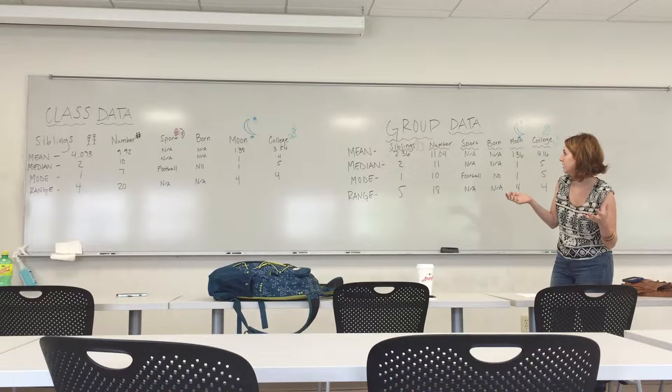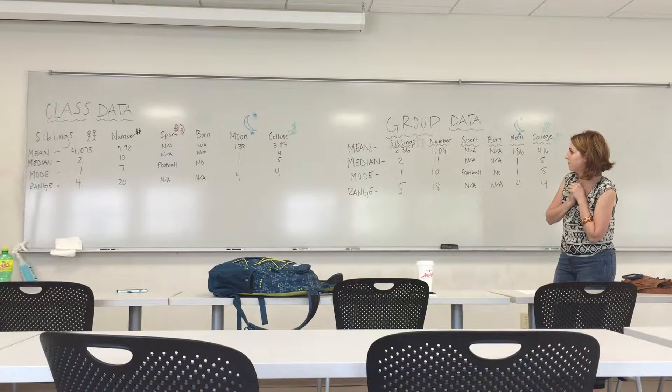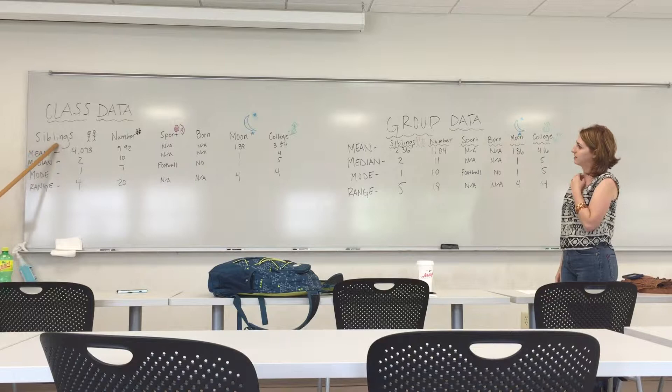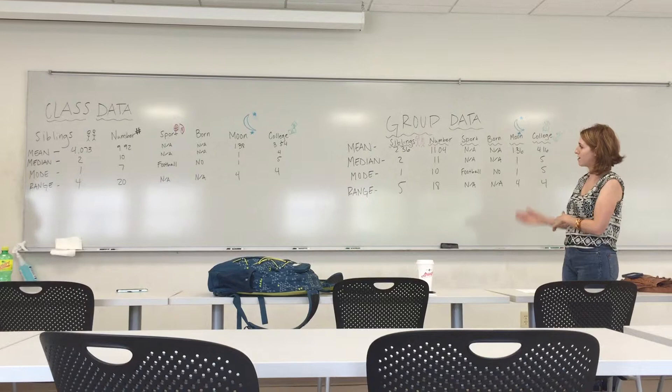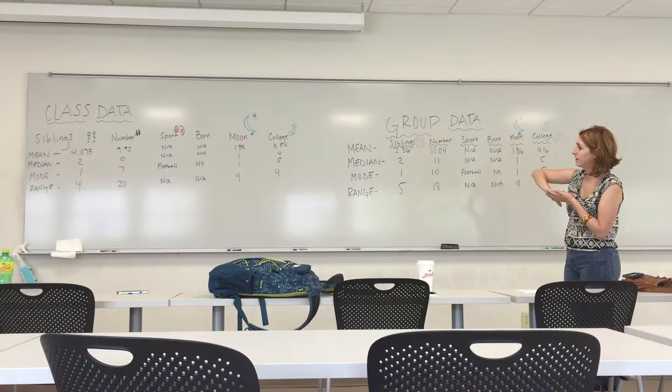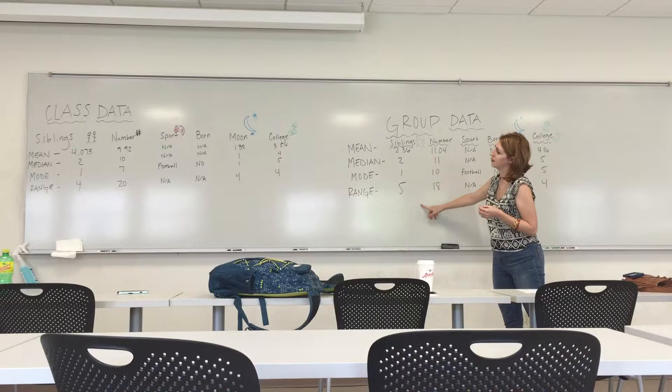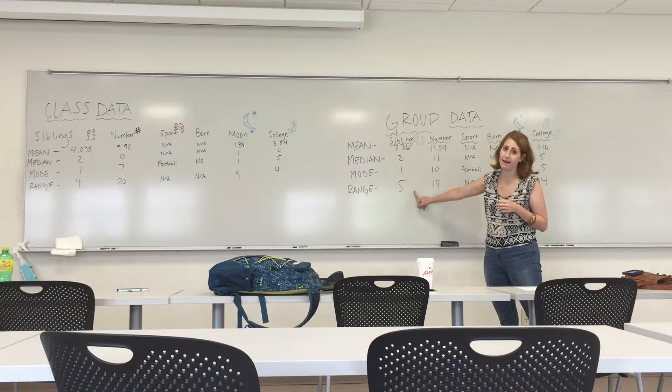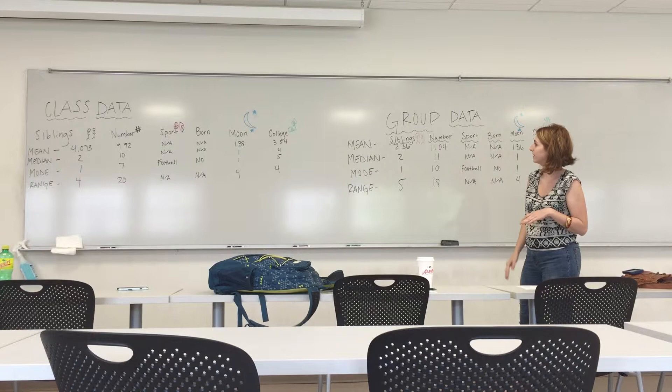And then the last one is the number of siblings. And the class data is a little bit higher when it comes to the number of siblings than our group data, where the mean is only 2.36 as compared to 4.073. But other than the mean, everything else is pretty similar. We had a bit larger of a range because we had quite a few people in our group data who had six siblings. But for the most part, our group surveys had people with a fewer number of siblings.